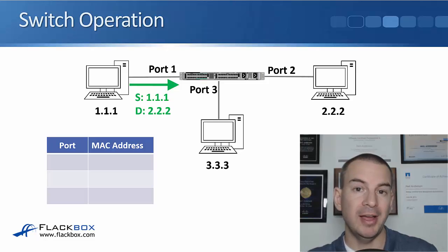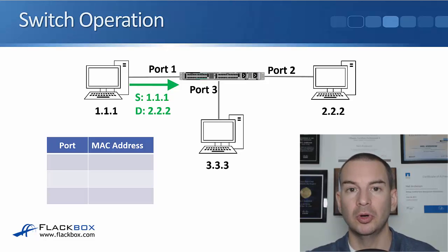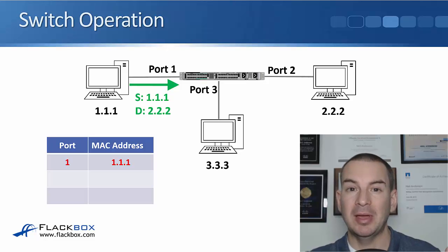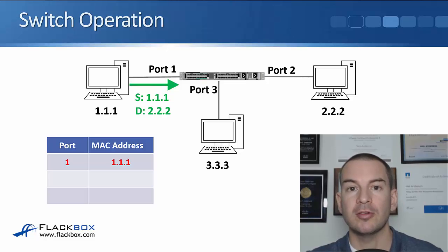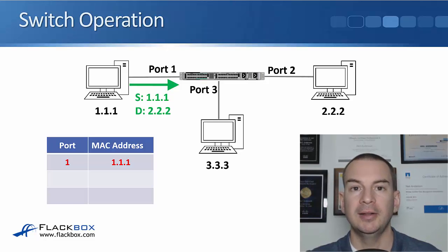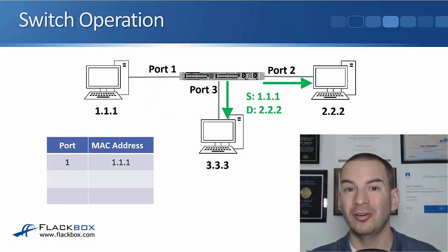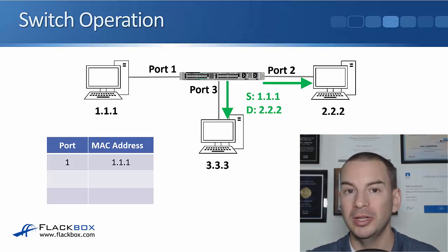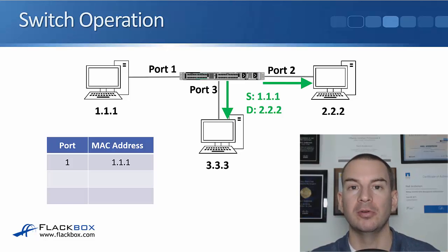Then the host on the left, 1.1.1, sends a frame in with the destination MAC address of 2.2.2. So the switch will see that. It sees a frame coming in with the source MAC of 1.1.1 and the destination MAC of 2.2.2, so it learns that 1.1.1 is reachable on port 1 and puts that information into the MAC address table. The destination 2.2.2 is not in the MAC address table yet, so it's an unknown unicast address and the switch will flood it out all ports apart from the one it was received on.